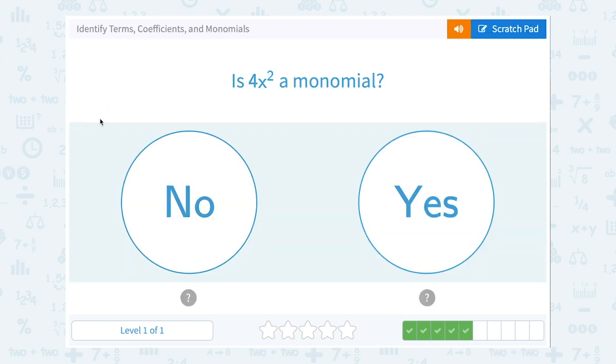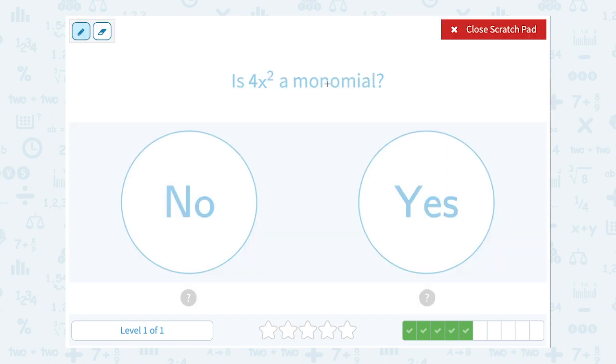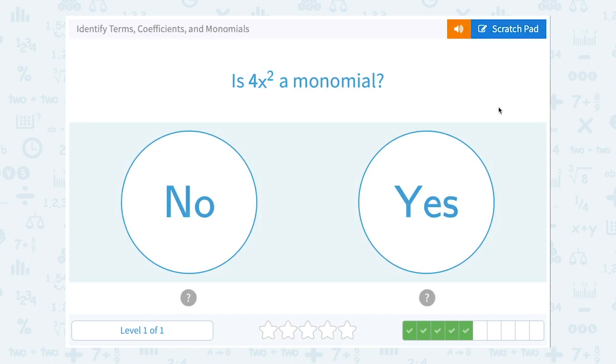Is 4x squared a monomial? Well, remember, monomial is a vocabulary word that means one term. Mono always means one, so monomial is one term. Well, yes, if I look at 4x squared, there's no plus or minus signs, right? Nothing separating the two terms, so that's all one term. So, yes, it's a monomial.